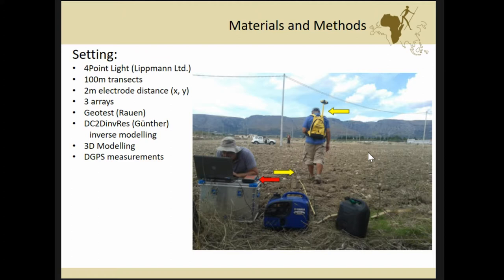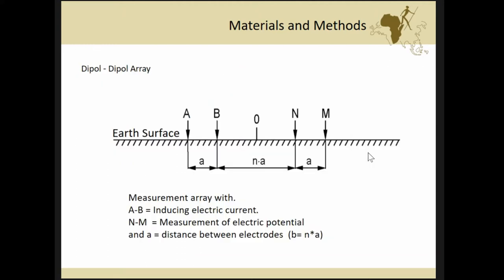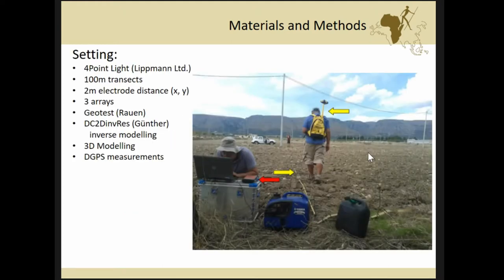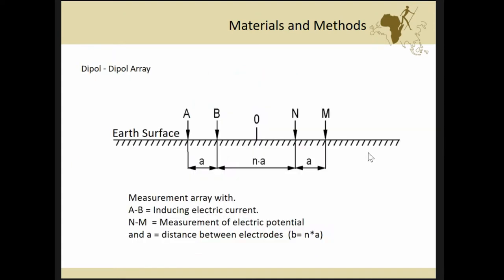So here's some image of the setting we applied. So we did the geoelectrics. We used the four-point light Lippmann device. We did 100 meter transacts and the electrode spacing was actually two meters. And we did three different arrays. So Schlumberger array, Wenner array and Dipol-Dipol array. And we used the geotest to drive the measurement. We used first then DC2D in DRESS from Günther to do the inverse modeling. And then Patricio did a detailed 3D modeling. And we did also some GPS measurements to get also the exact locations.